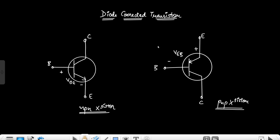Hello everyone. In this video I am discussing the concept of the diode-connected transistor, just as I had discussed the diode-connected MOSFET. As we know, a transistor is a three-terminal device: base, collector, and emitter. To make this device a two-terminal device, we have to short the base and collector terminals. Now this has become a two-terminal device — it is a diode-connected transistor.